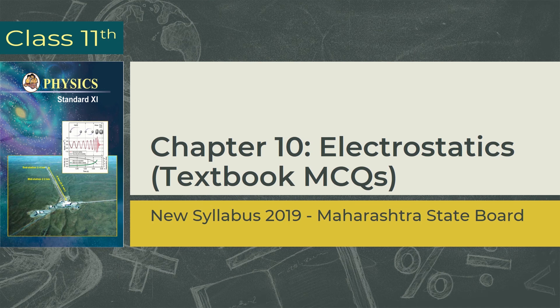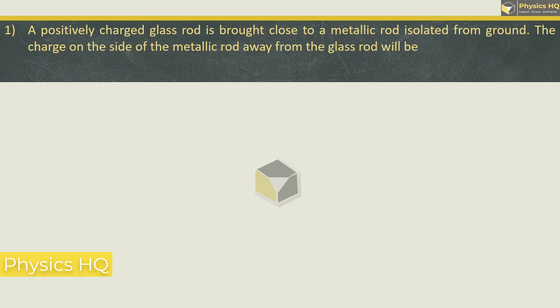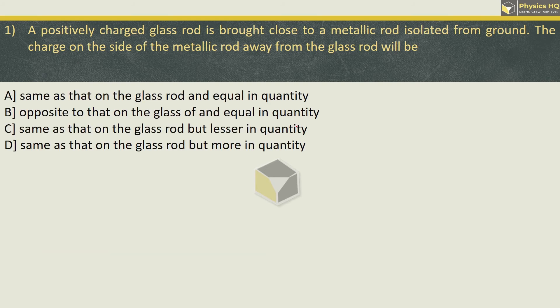Let us start with the first MCQ. A positively charged glass rod is brought close to a metallic rod isolated from ground. The charge on the side of the metal rod away from the glass rod will be, these are the options. So let us understand this.